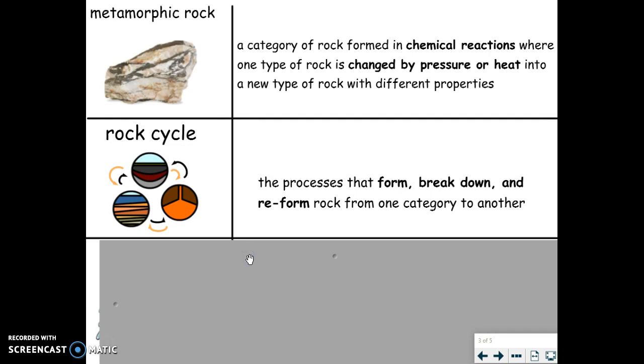Rock cycle: the processes that form, break down, and reform rock from one category to another. The three types of rock - igneous, sedimentary, and metamorphic - are formed through the rock cycle. All of these processes help Earth reuse its matter and materials to form different types of rocks. You may notice that the words form, breakdown, and reform are in bold because they are important in the definition. If you want to underline or highlight those words, you should do so. If you are ready, continue with the video. If not, pause here.